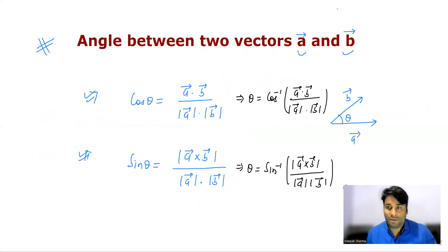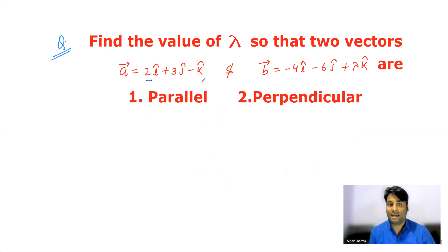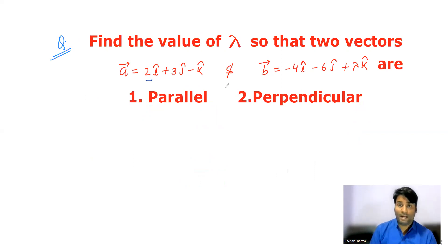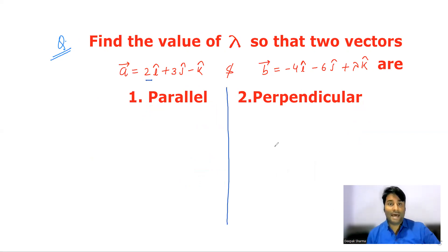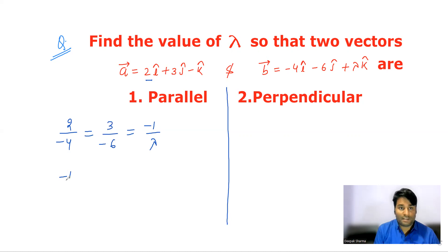Based on this, let's solve a question. We have vector a = 2i cap + 3j cap - k cap and vector b = -4i cap - 6j cap + lambda k cap. To find lambda for which the vectors are parallel: 2/(-4) = 3/(-6) = -1/lambda, which gives -1/2 = -1/2 = -1/lambda, so lambda equals 2.